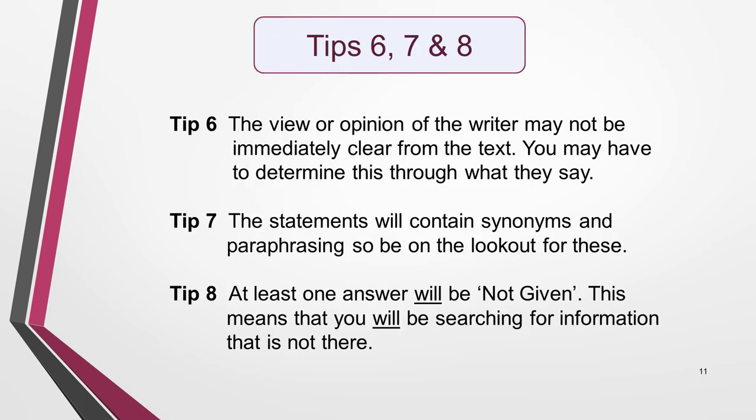Now for the final three tips. Tip six: the view or opinion of the writer may not be immediately clear from the text — you may have to determine this through what they say. Tip seven: the statements will contain synonyms and paraphrasing, so be on the lookout for these. Tip eight: remember that at least one answer will be not given. This means that you will be searching for information that's not there. It's easy to waste time searching for information you're never going to find because it isn't included. Use the strategy I'm about to show you to quickly come to a decision about each statement and move on.